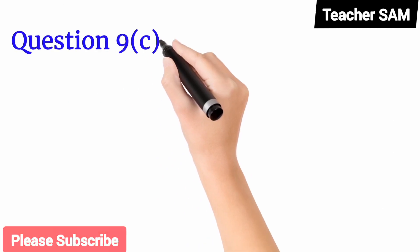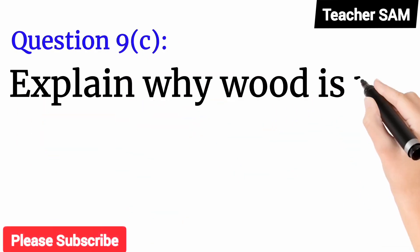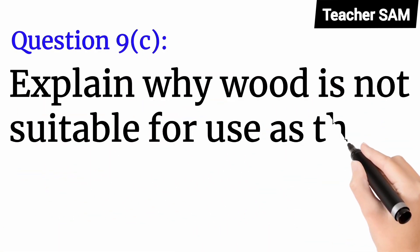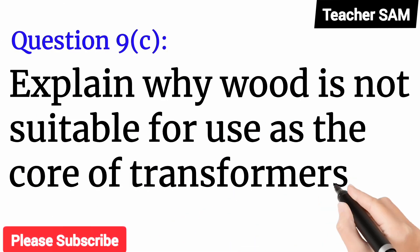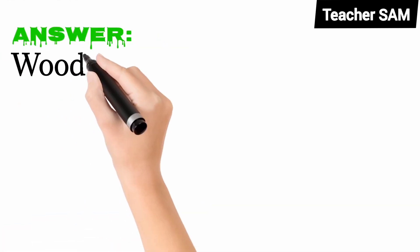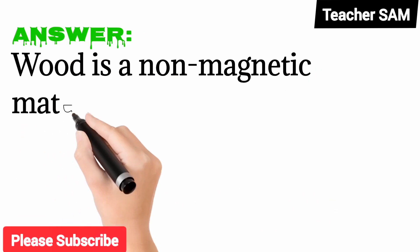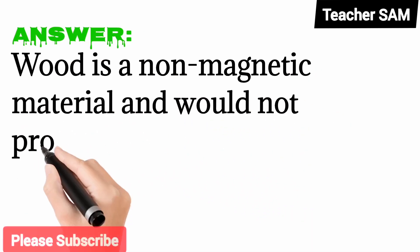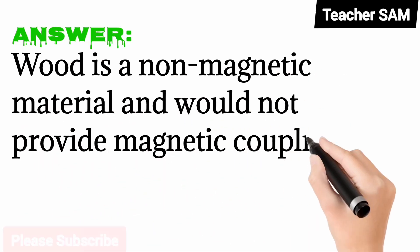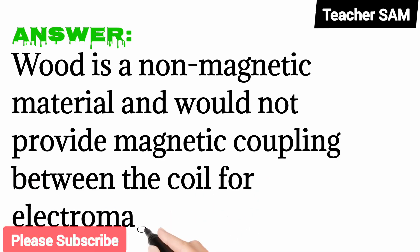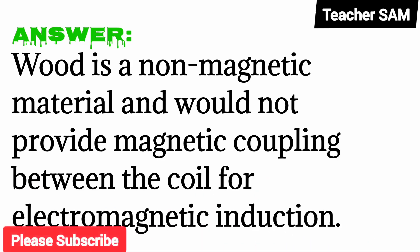Question 9C: Explain why wood is not suitable for use as the core of transformers. Answer: Wood is a non-magnetic material and will not provide magnetic coupling between the coils for electromagnetic induction.